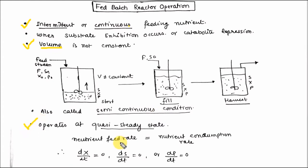At quasi steady state, nutrient feed rate is equal to nutrient consumption rate. That means dx/dt, ds/dt, and dp/dt are all equal to 0.